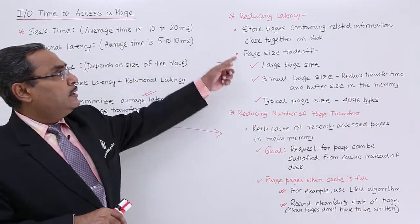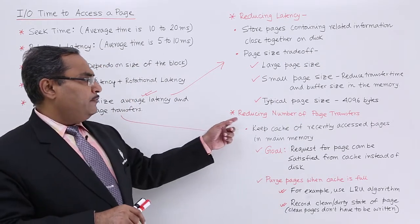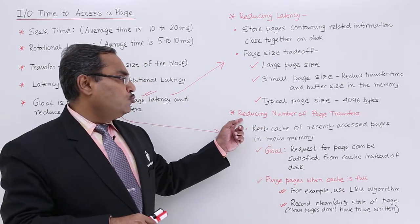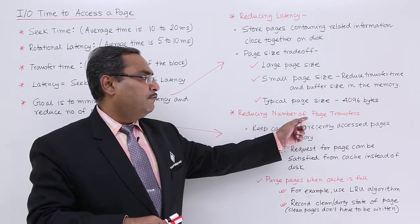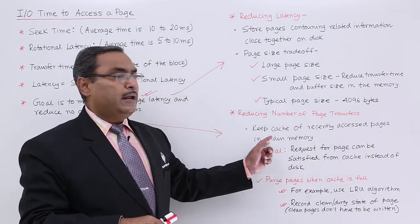The typical page size is 4KB, that is 4096 bytes. We have considered how we can reduce our latency. Next point is reducing number of page transfers. How to reduce the number of page transfers?